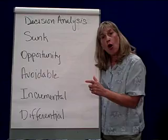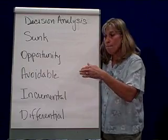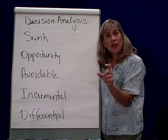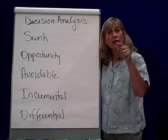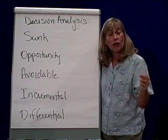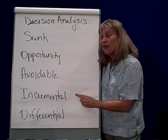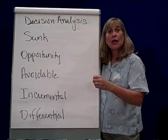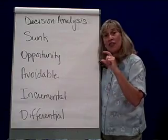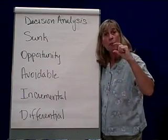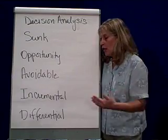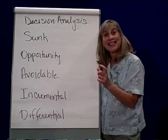Incremental cost is the cost between making one unit and making two units. Every time you make one more unit, you incur that much more incremental cost. A variable cost is an incremental cost because the more units you produce, the more your costs are, and that cost changes by the same amount from one unit to two units to three units and so on. An incremental cost is looking at the difference.